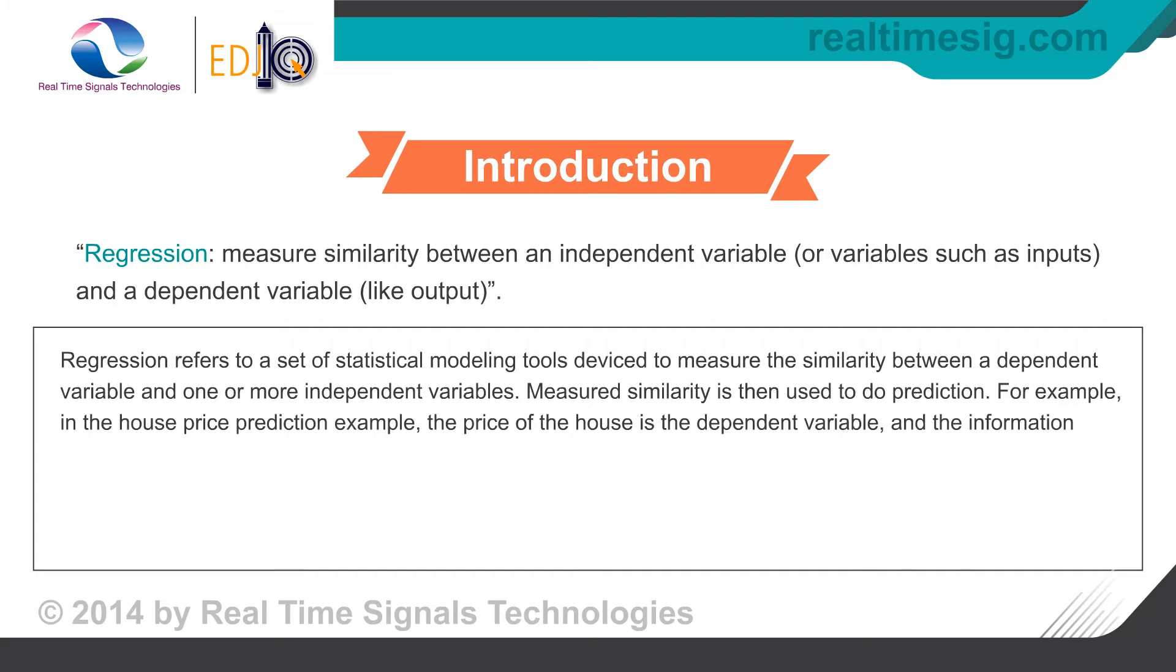For example, in the house price prediction example, the price of the house is the dependent variable, and the information such as the number of bedrooms, age of the house, total construction area are the independent variables.